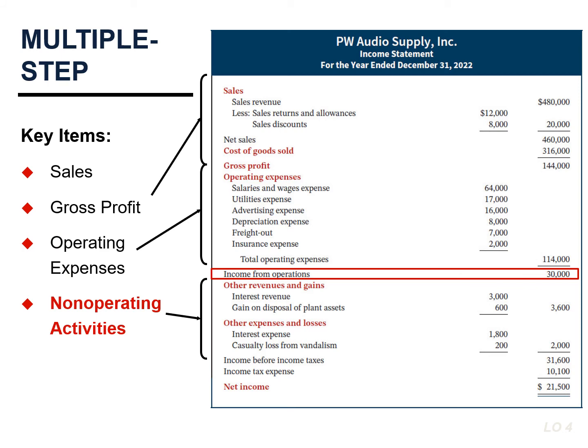Non-operating activities are reported in the income statement after operating activities. These activities consist of various revenues, expenses, gains, and losses that are unrelated to the company's main line of operations. The distinction between operating and non-operating activities is critical to external users, who view operating income as sustainable, whereas many non-operating activities are considered non-recurring.